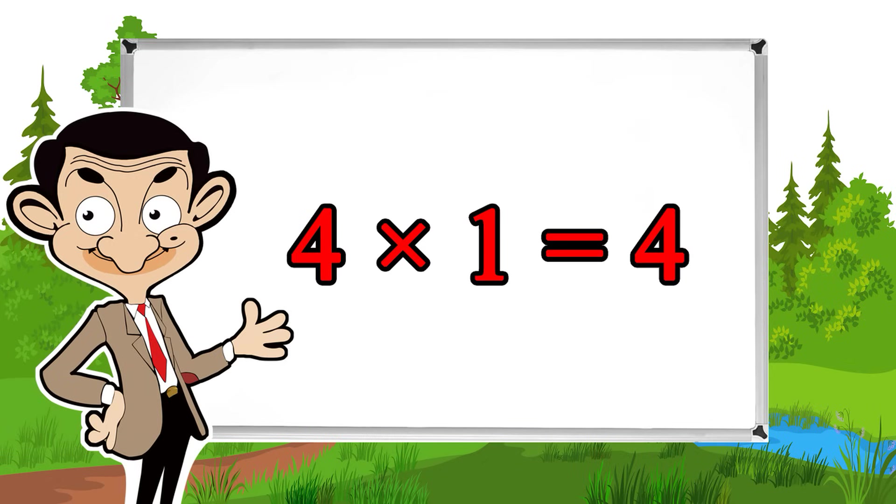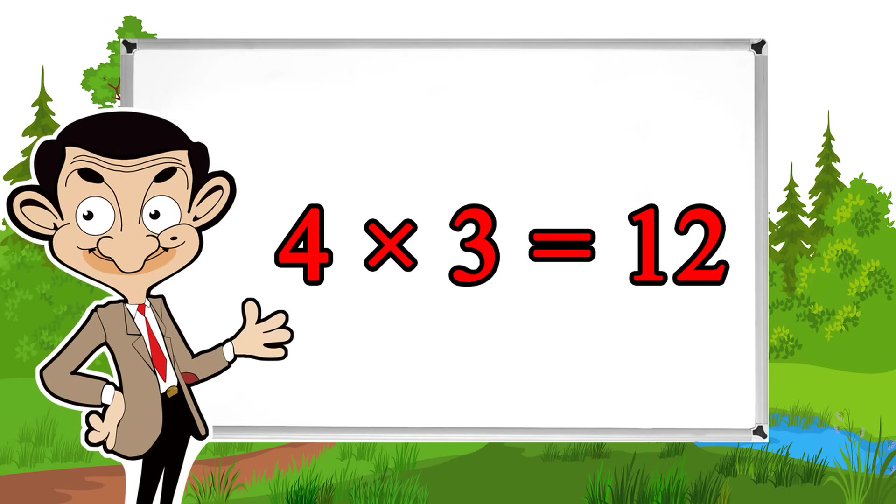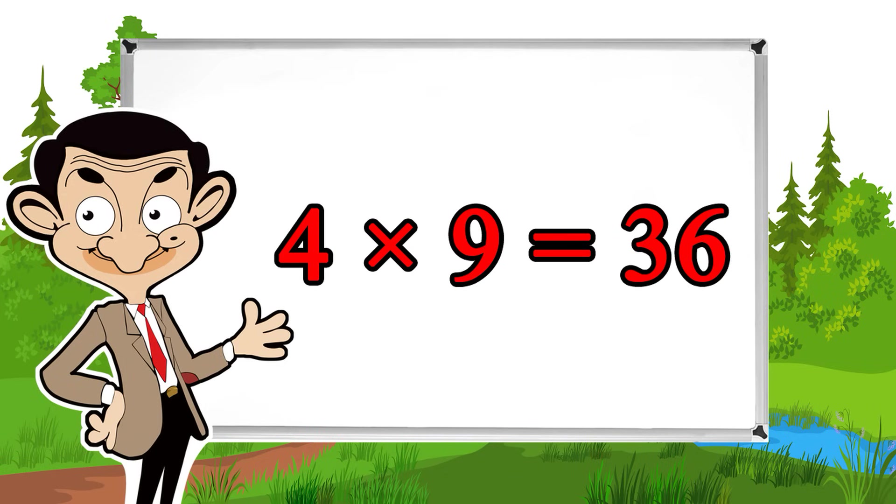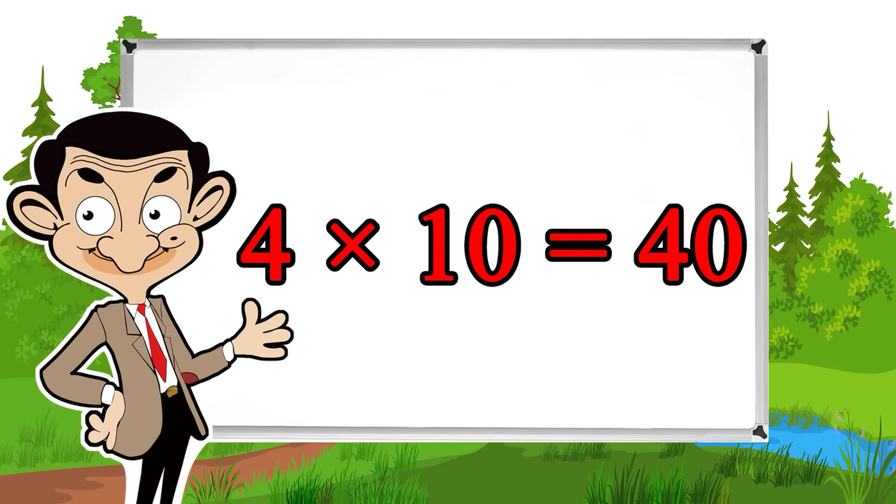4 times 1 equals 4, 4 times 2 equals 8, 4 times 3 equals 12, 4 times 4 equals 16, 4 times 5 equals 20, 4 times 6 equals 24, 4 times 7 equals 28, 4 times 8 equals 32, 4 times 9 equals 36, 4 times 10 equals 40.